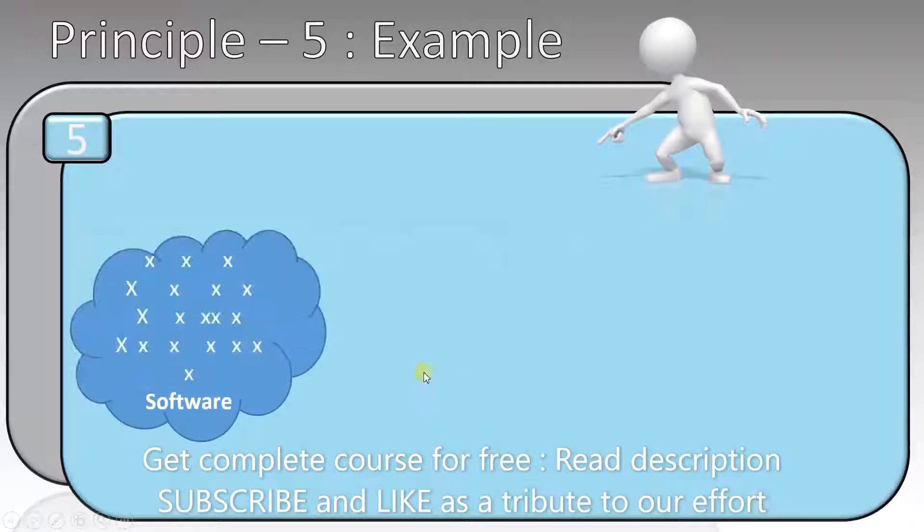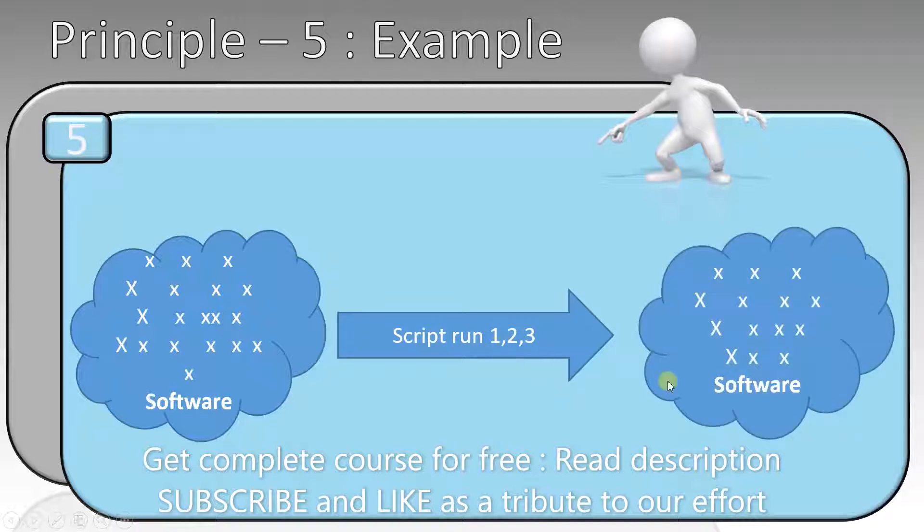So now we turn to an example to help us understand this better. Suppose there is a software with 20 defects in it. When you run your script the first time, you find 5 defects. Then the software is left with 15 defects.